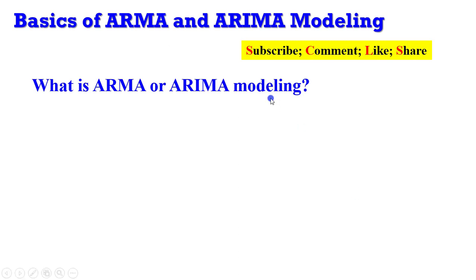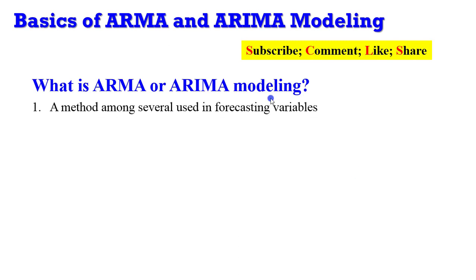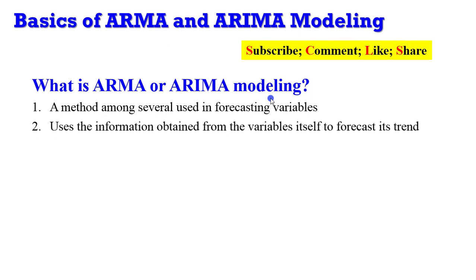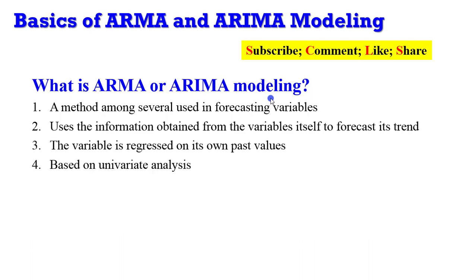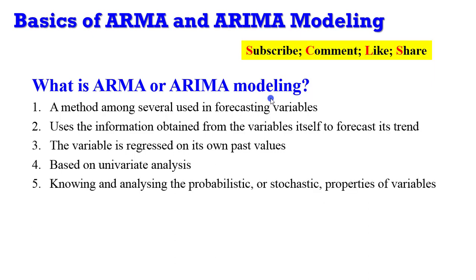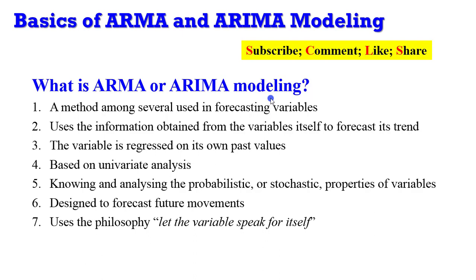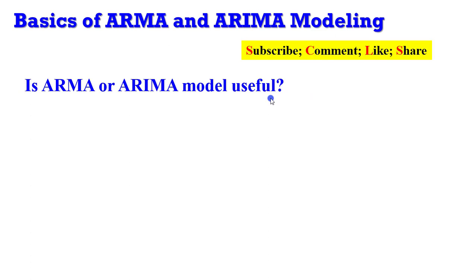ARMA or ARIMA modeling is a method among several used for forecasting variables. It uses information obtained from the variable itself to forecast its own trend. The variable is regressed on its own past values. It is based on univariate analysis, requires knowing the stochastic properties of the series, and uses the philosophy of letting the variable speak for itself.